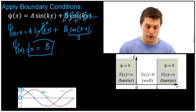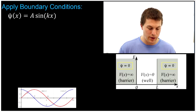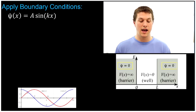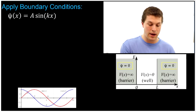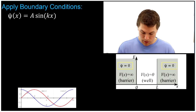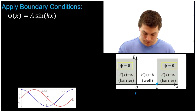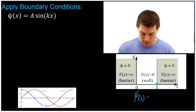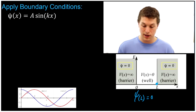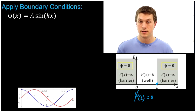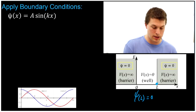Now that B is zero, our wave function simplifies to psi(x) = A·sine(kappa·x). We still don't know A or kappa, so we apply the second boundary condition. We know that psi(L) also equals zero, so let's plug in L for x and see what that tells us about our constants.